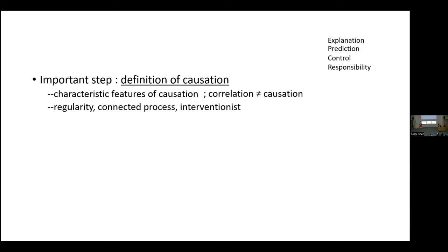There are many different accounts or definitions of causation in the philosophical literature. Three main examples: regularity accounts, popularized by Hume and also Mackie; connected process accounts, discussed by Wesley Salmon; and interventionist accounts, the most commonly used account in philosophy of science, whose main proponent is Jim Woodward. There are many other accounts of causation in the philosophy of science literature, and some get more attention than others.